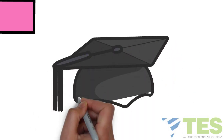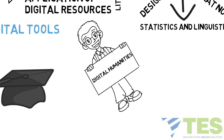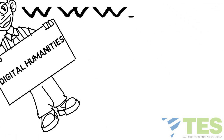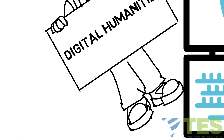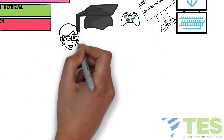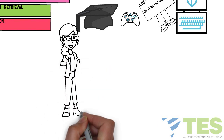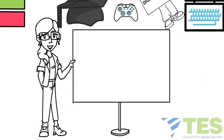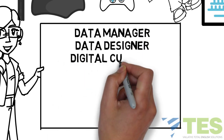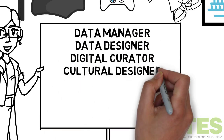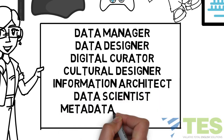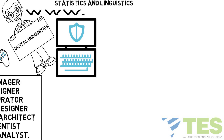Graduates and post-graduates in digital humanities may work with web designing, software programming, technical writing, game studies, etc., and can embark on new age professions like data manager, data designer, digital curator, cultural designer, information architect, data scientist, and metadata analyst.